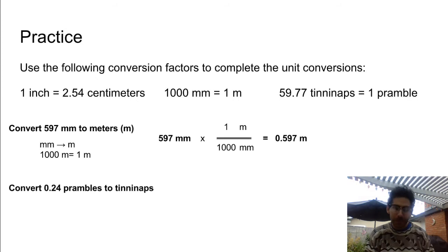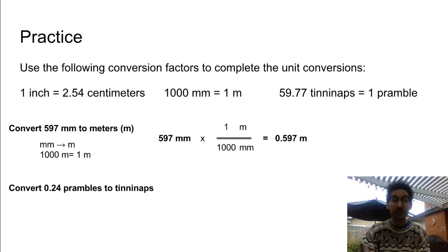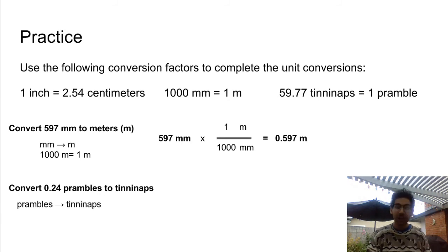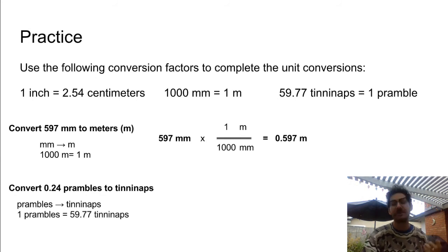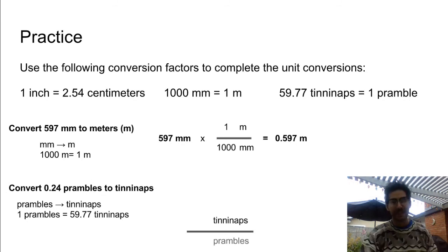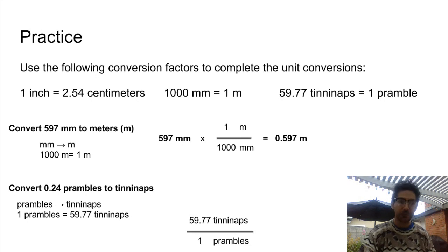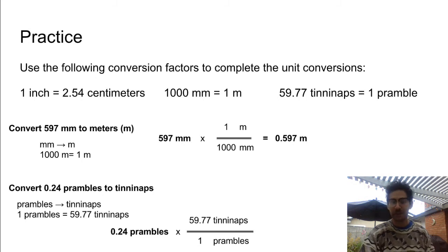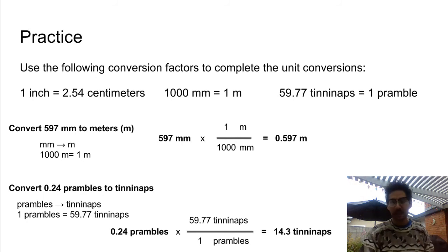Now try this problem — convert prambles to tin-and-apps. Pause the video and try it. We want to go from prambles to tin-and-apps. The conversion factor is: 1 pramble equals 59.77 tin-and-apps. Tin-and-apps go on top, prambles on the bottom. Multiply: 0.24 times 59.77 divided by 1 gives 14.3 tin-and-apps.